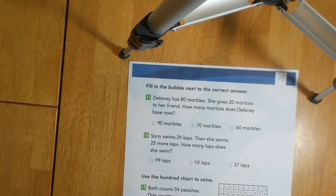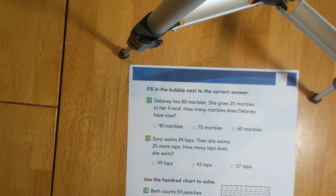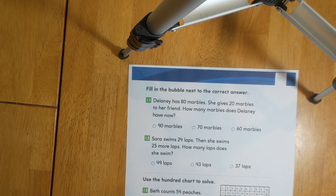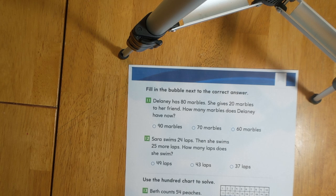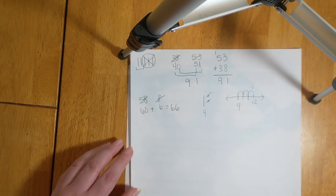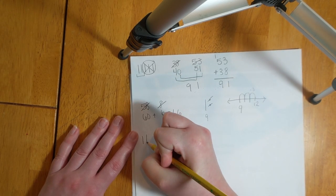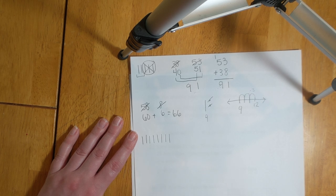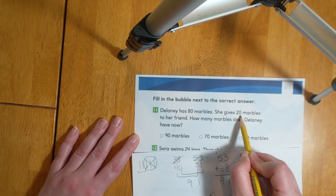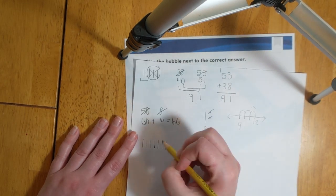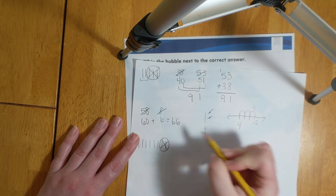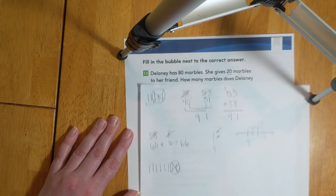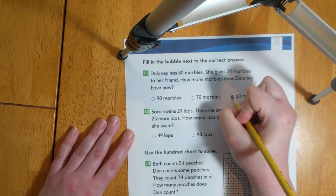For numbers 11 and 12, they would like for us to continue filling in the bubbles next to the correct answer. Number 11, Delaney has 80 marbles. She gives 20 marbles to her friend. How many marbles does Delaney have now? For this one, let's draw a picture to solve. Delaney is starting with 80 marbles, which is eight groups of 10. She gives her friends 20 marbles. So we'll circle two groups of 10 and cross it off. That leaves us with 10, 20, 30, 40, 50, 60. That means Delaney has 60 marbles now.